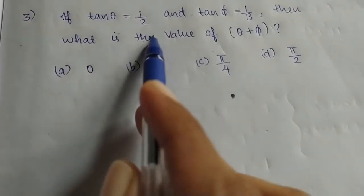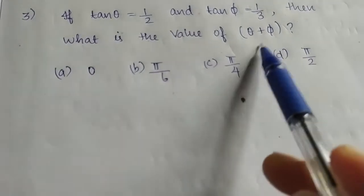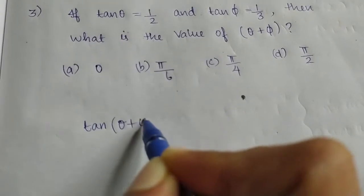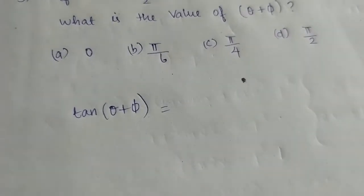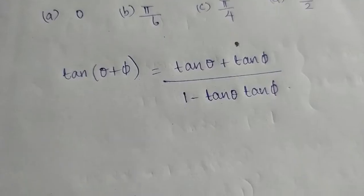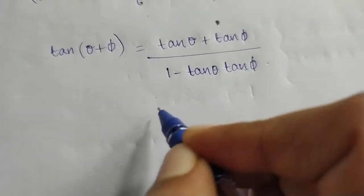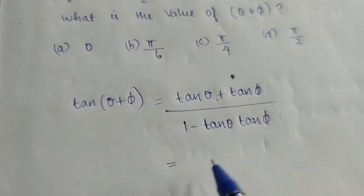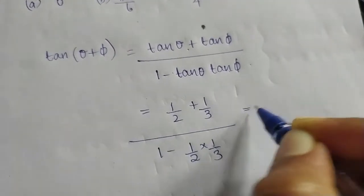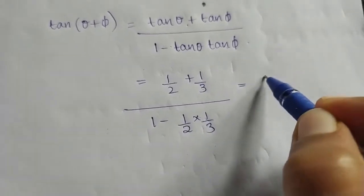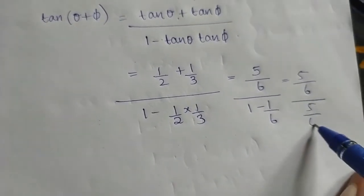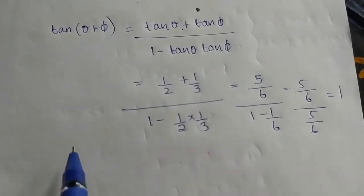The third question: tan theta equals 1/2 and tan phi equals 1/3. We use the addition formula for tan(theta + phi): tan x plus tan y divided by 1 minus tan x tan y. Substituting: 1/2 plus 1/3 divided by 1 minus (1/2)(1/3). That gives 3 plus 2 over 6 equals 5/6, divided by 1 minus 1/6 equals 5/6. So 5/6 divided by 5/6 equals 1. Therefore tan(theta + phi) equals 1.